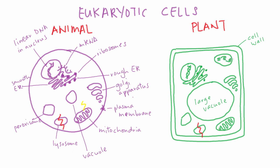The next organelle found only in plants is the reason why they're normally green. This is the chloroplast, which contains the green pigment chlorophyll involved in photosynthesis. The chloroplast is where photosynthesis happens. Light energy and CO2 are converted into oxygen and sugars.